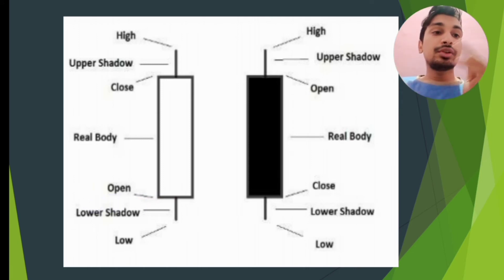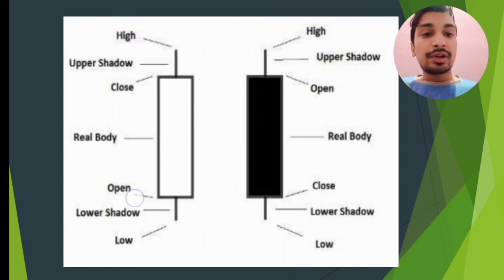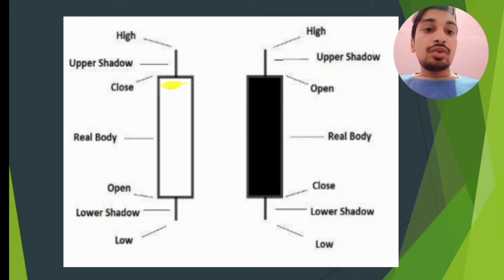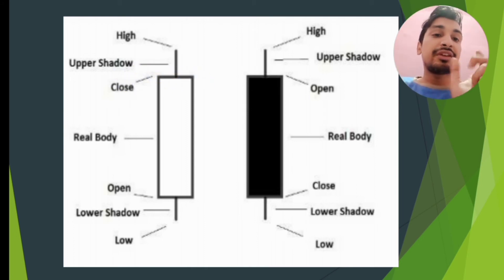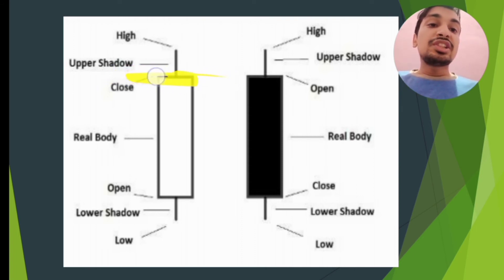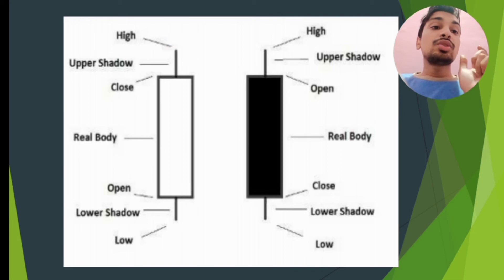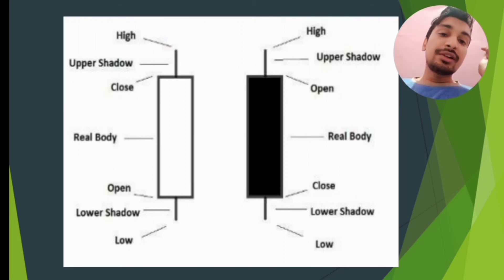For a five-minute candle, this one candle represents five minutes of time. The stock market opens and the share price starts moving. Within those five minutes, the price opens at a level, goes up to the highest point, dips to the lowest point, and then closes at the end of the five-minute interval. The closing price is the final price at the end of those five minutes. The bottom of the candle body is the opening price, the bottom wick tip is the lowest price, and the top wick tip is the highest price. One candle gives you four key pieces of information: highest price, lowest price, opening price, and closing price.